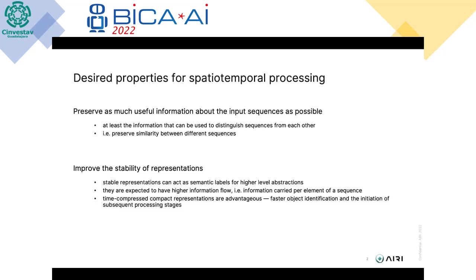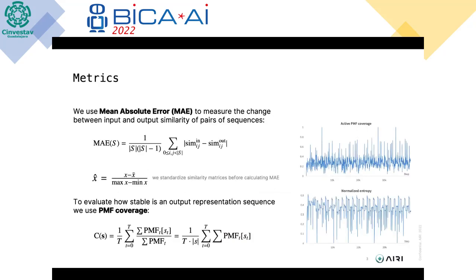The second property is to improve the stability of representations — we want to time-compress the input sequences in order to react faster to what we see. These two properties counterbalance each other, so we have to find a balance between them. To measure similarity preservation, we use the mean absolute error between two similarity matrices: one calculated from input sequences and one from output sequences.